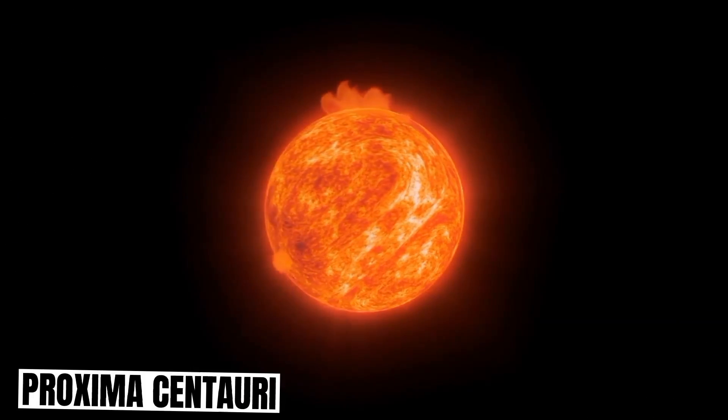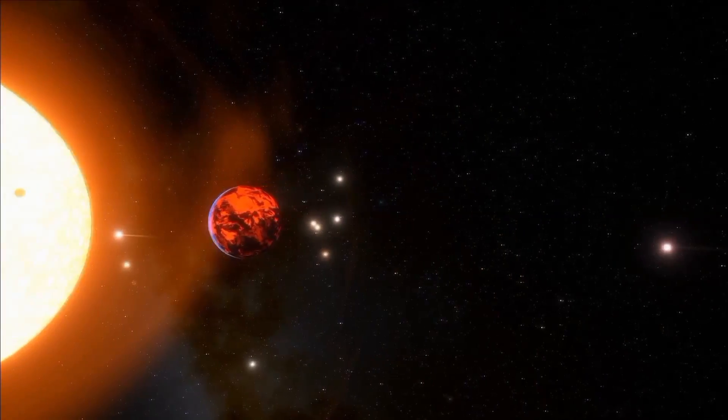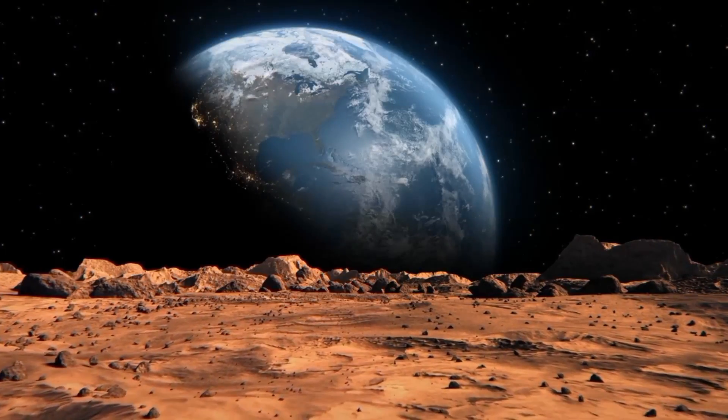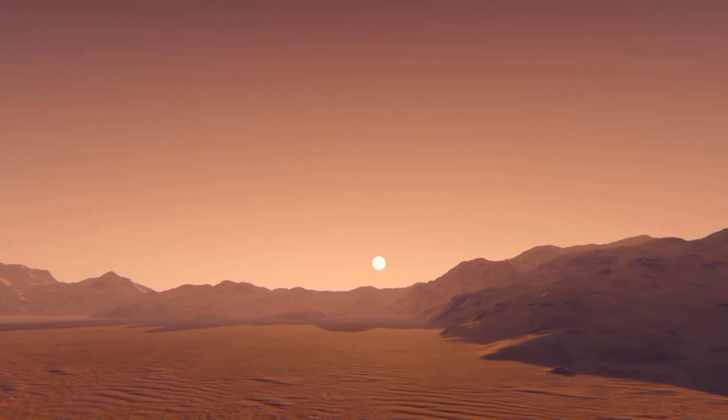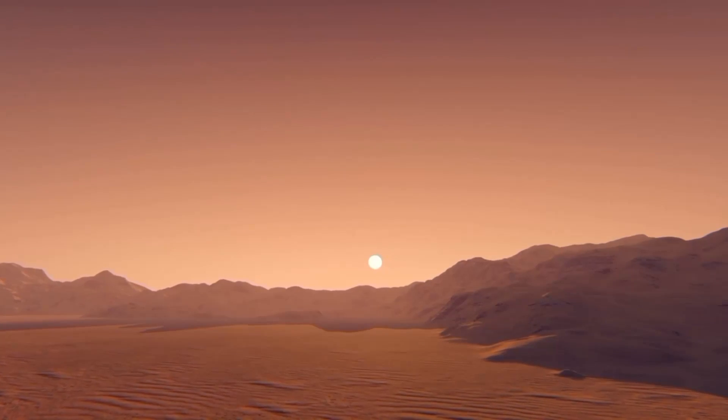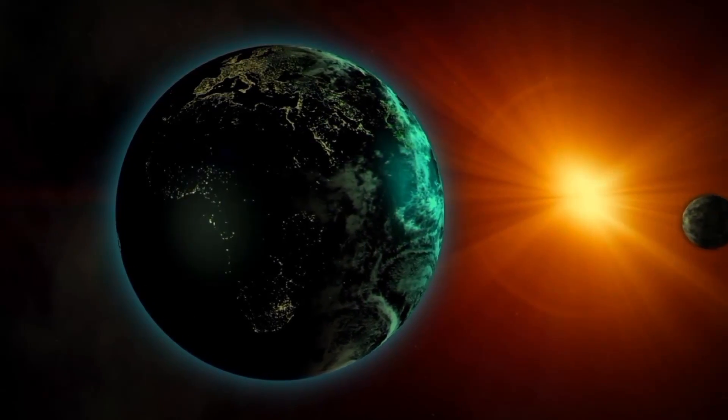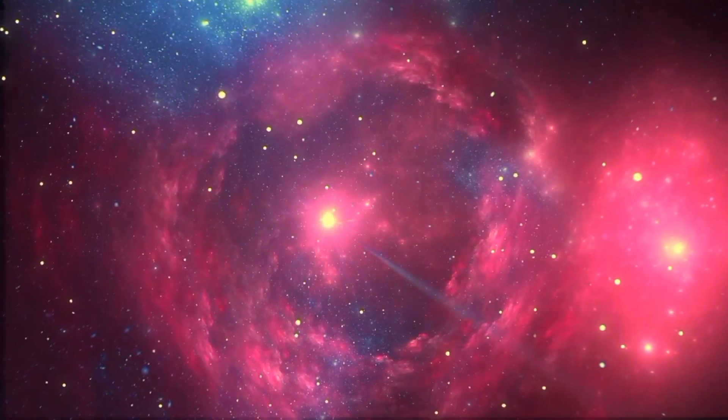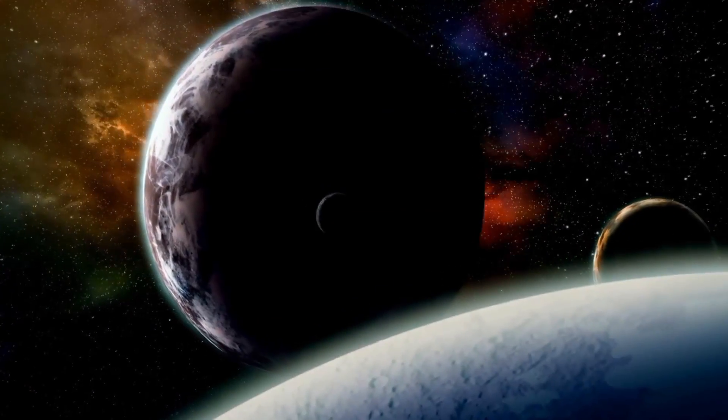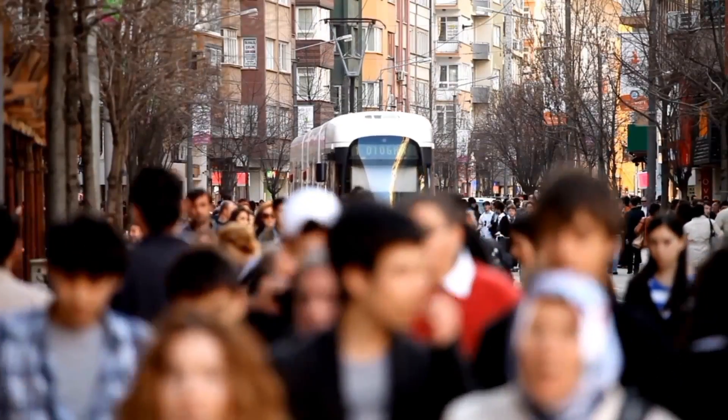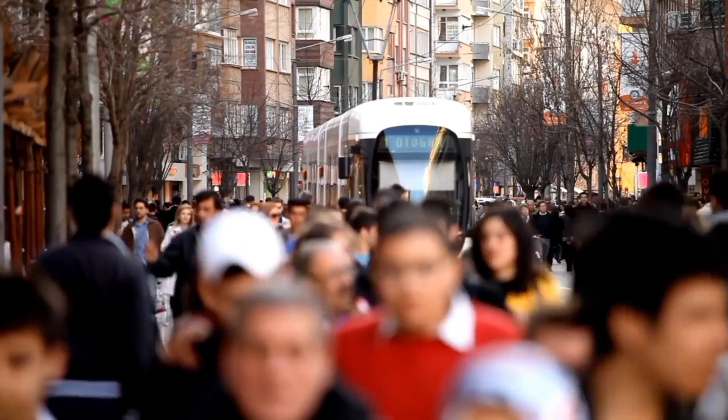At least three planets around Proxima Centauri, our nearest neighboring star, have just been discovered, most likely being rocky in composition. It is more than 25 trillion miles away, or 4.2 light-years in distance. Compared to most of the exoplanets discovered to date, others are located hundreds or thousands of light-years distant from their host stars. But other than the existence of other planets in the universe, is there any other evidence that humans are not the only intelligent life in the cosmos?